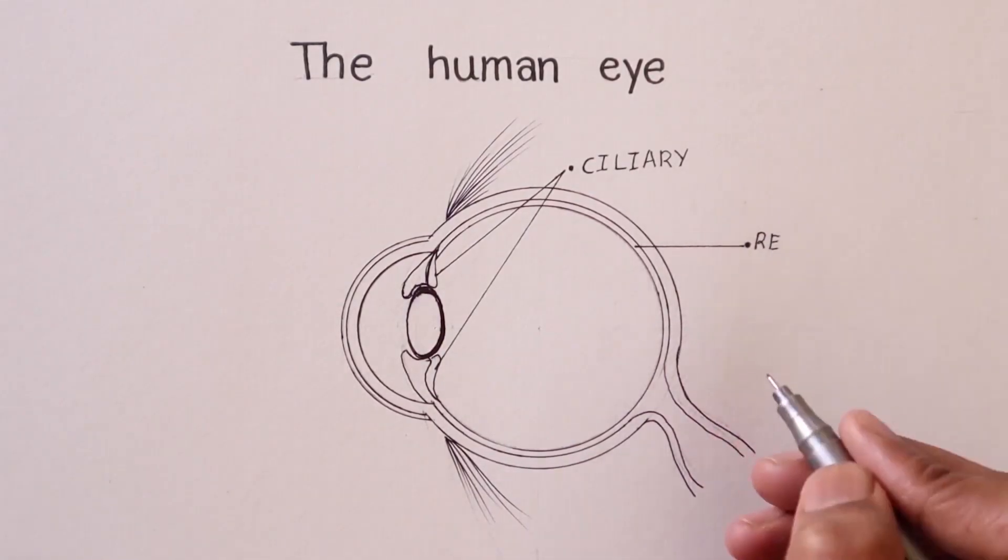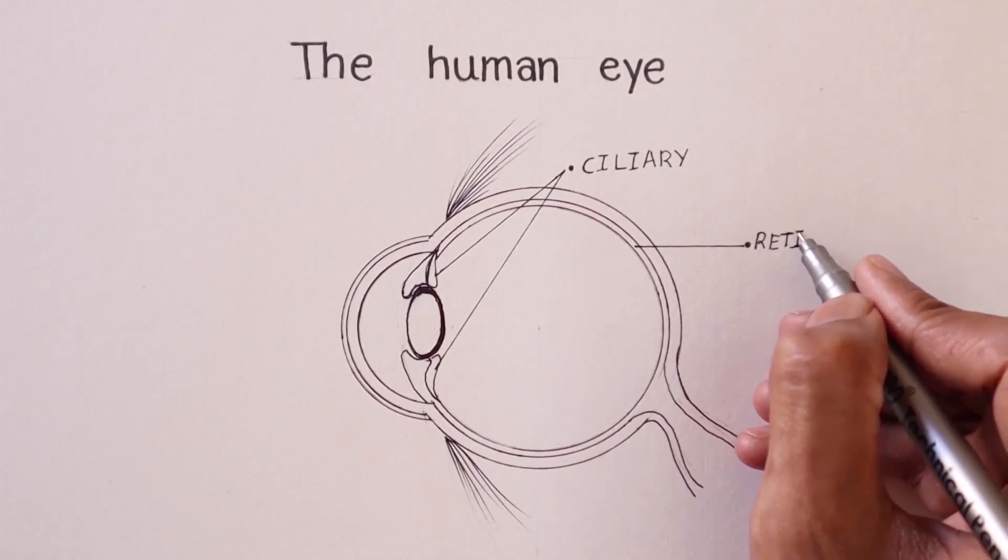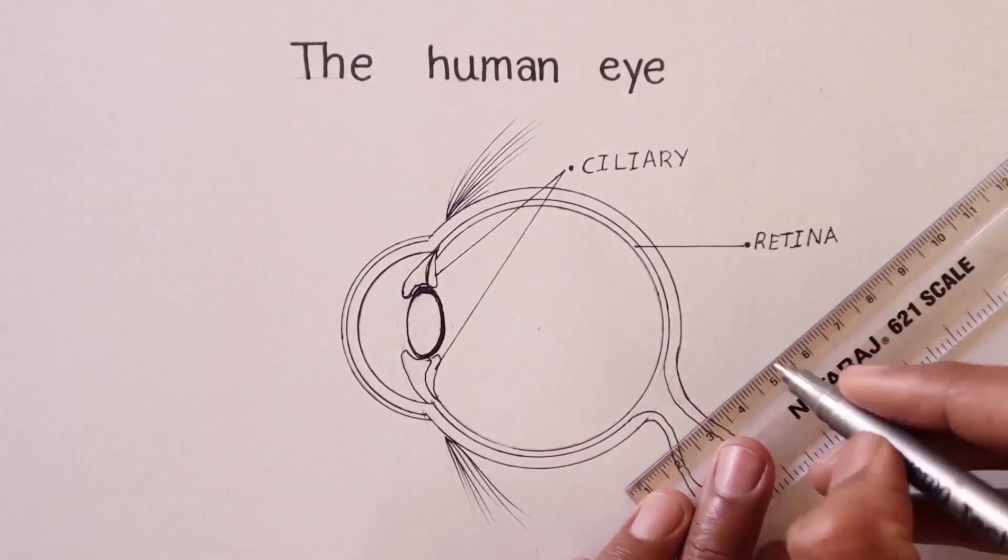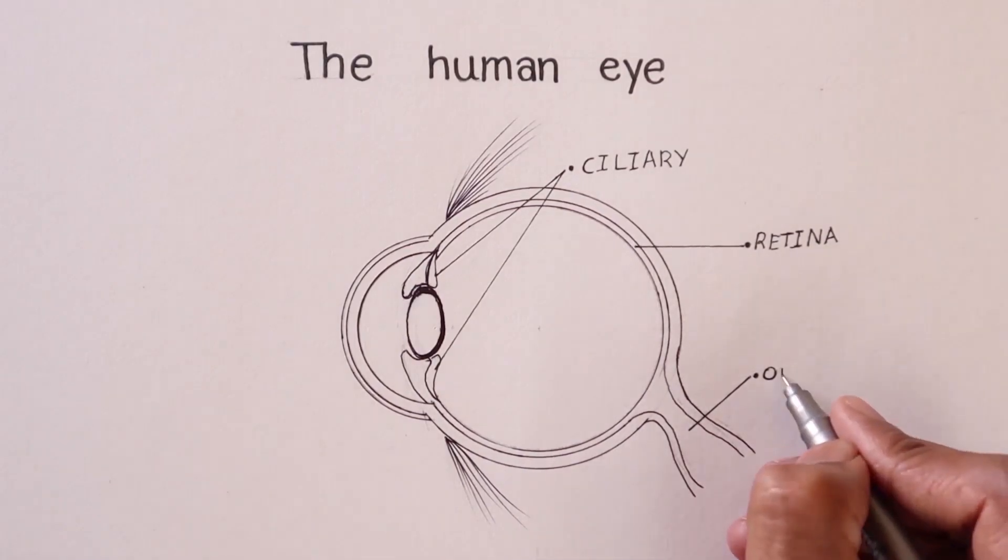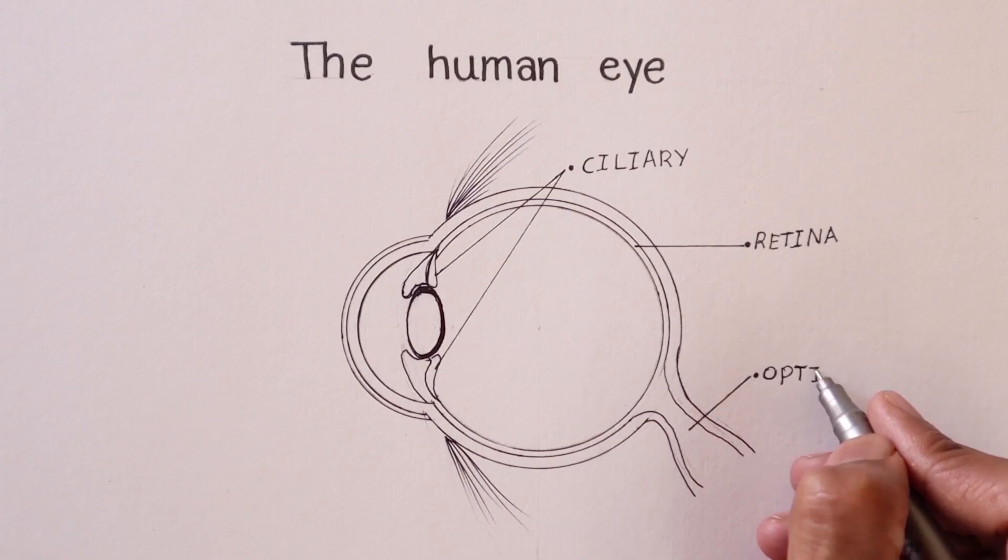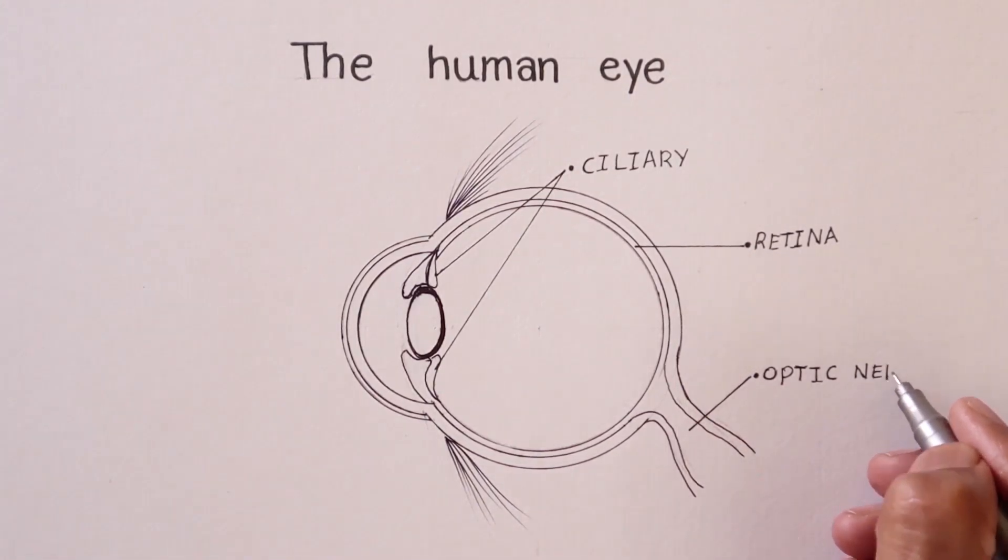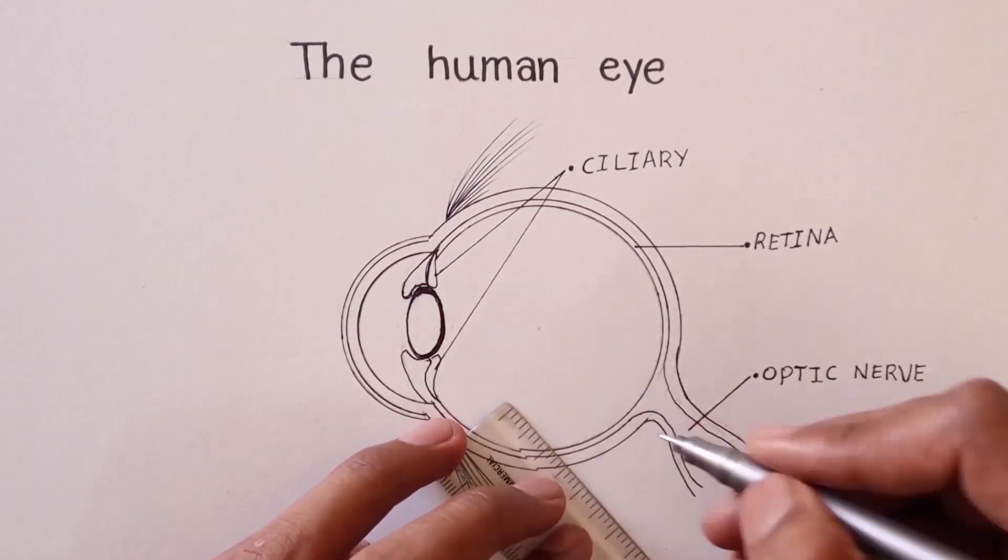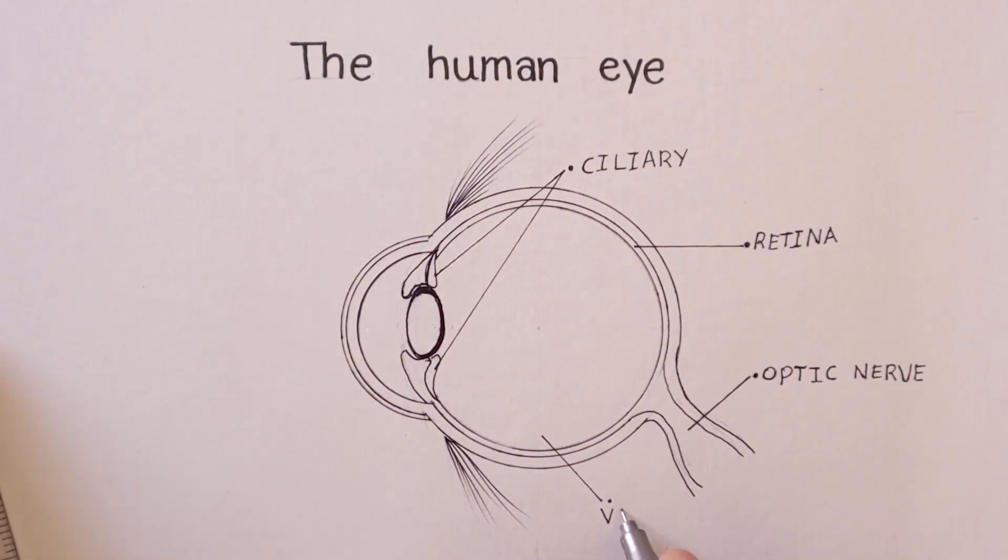And this part is called as retina. And inside the tube structure, the optic nerve is located. So now it plays an important role in human body. Students don't miss the nerve part. Here you can see the vitreous body of the eye which is located in the inner part of the eye, so it's also called as vitreous humor.